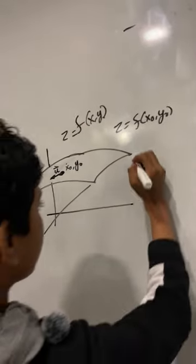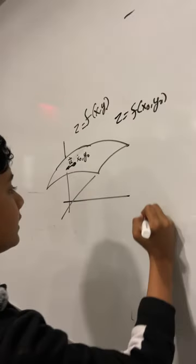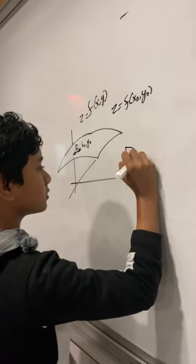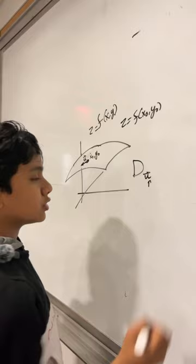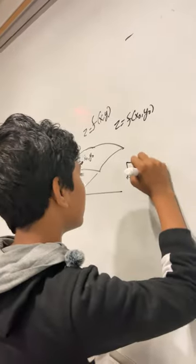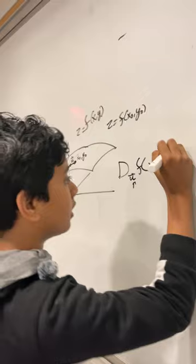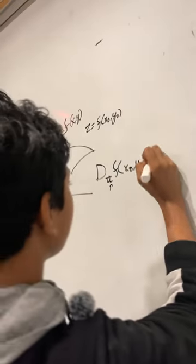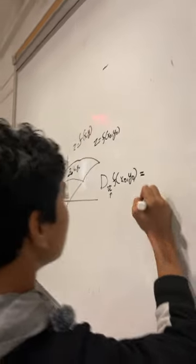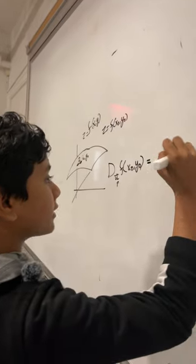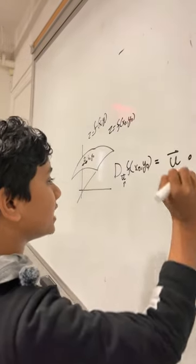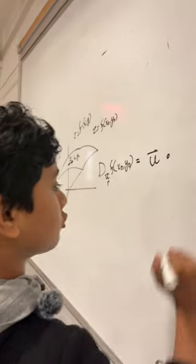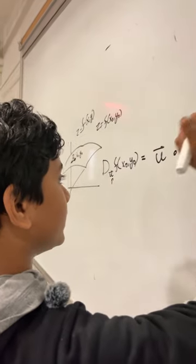Then the directional derivative in any direction, well, the direction determined by unit vector u at some point x naught, y naught is just equivalent to the dot product of u itself and the gradient, what we call the gradient.